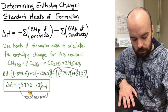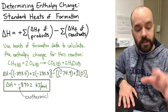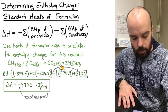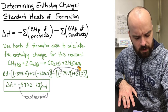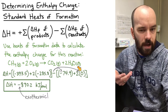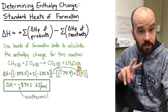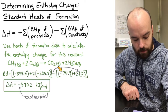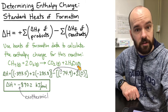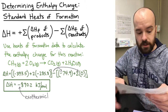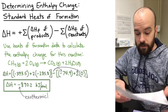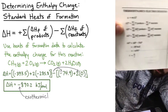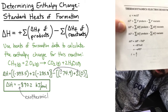Punching everything into the calculator gives ΔH = negative 890.2 kJ/mol. The negative sign confirms this is exothermic. The most common mistake in this calculation is failing to distribute the negative sign to both reactants. In this case one reactant was zero so it didn't matter, but when neither reactant is zero it's essential that the minus sign is applied to both.